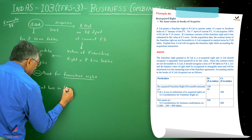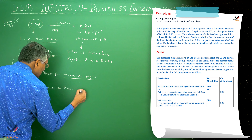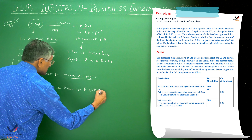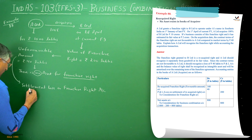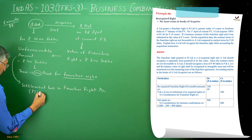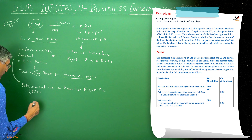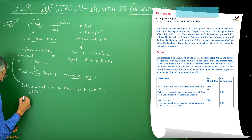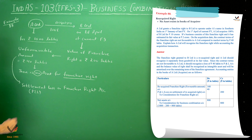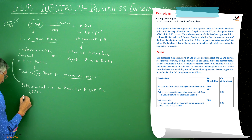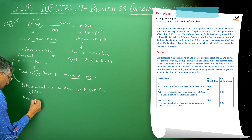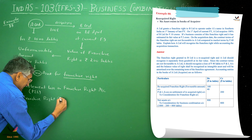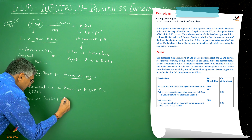On the franchise right account, we record the capital — that is, the profit and loss account portion — and this is the intangible asset. Let us write this as franchise right. This is the intangible asset.